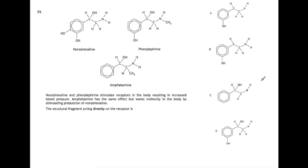Question 25. This is a pharmaceutical one. So the answers I put are at the side here. So you've got noradrenaline and phenylephrine are stimulate receptors in the body, resulting in an increased blood pressure. Amphetamine has the same effect, but works indirectly on the body by stimulating production of noradrenaline. The structural fragment acting directly on the receptor is what? So these two act directly. This one does not. So this one is kind of here as a red herring. So we can just score this out. We don't really want to know anything about that. We want to find what is the bit of the molecule that is acting directly on the receptor. So we need to find what is the fragment which is the same in both of these.